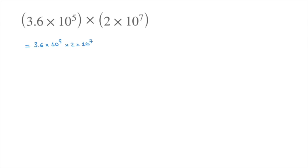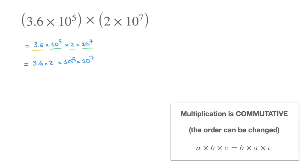The next thing I'll do is write both of the numbers 3.6 and 2 side by side, as well as both of the powers of 10 side by side — that's 10 to the power of 5 and 10 to the power of 7. In other words, this equals 3.6 times 2 times 10 to the power of 5 times 10 to the power of 7. Remember, multiplication is commutative, so we're allowed to change the order of these numbers.